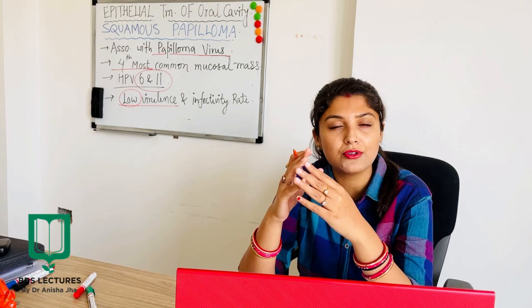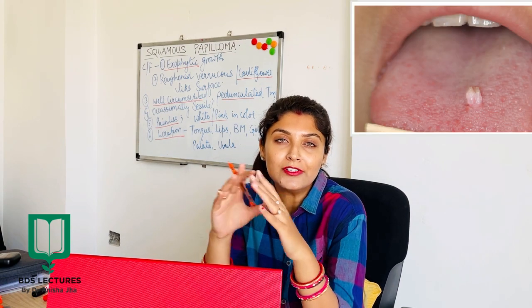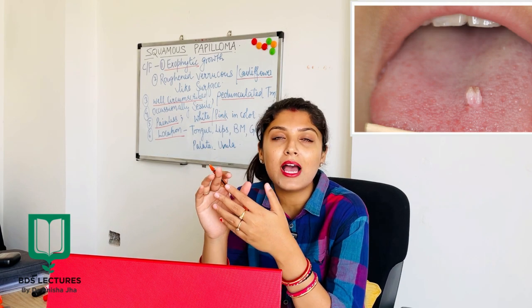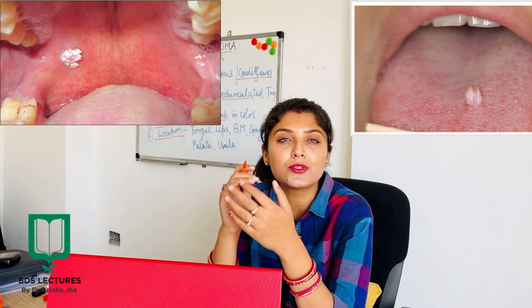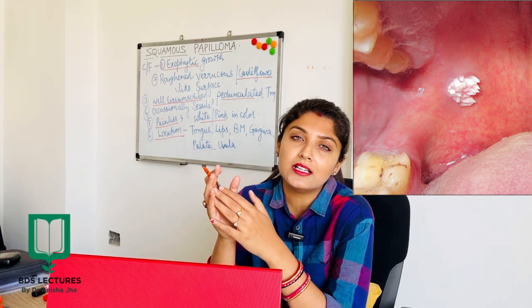Now let us discuss the clinical features of squamous papilloma. It has finger-like projections and an exophytic kind of growth, giving it a warty or cauliflower-like appearance, which is rough in nature. Most commonly it is found on the tongue, and can also be present on the lips, buccal mucosa, gingiva, and adjacent to the uvula. It is a well-circumscribed lesion, pedunculated in nature and occasionally sessile. It is painless and white to pinkish in color, depending on the keratin content present over the papilloma.